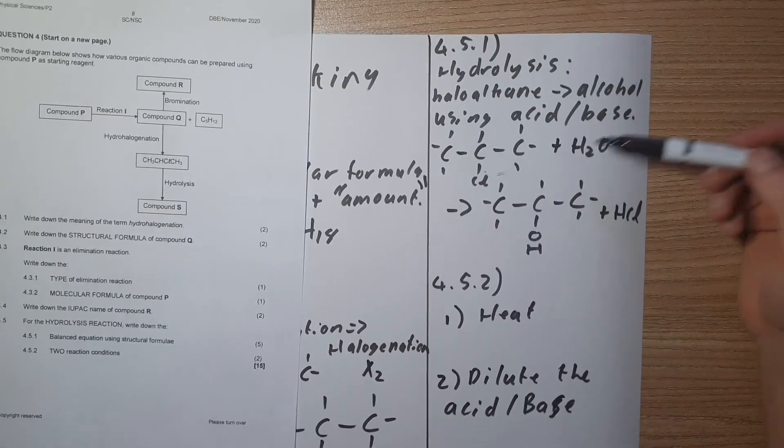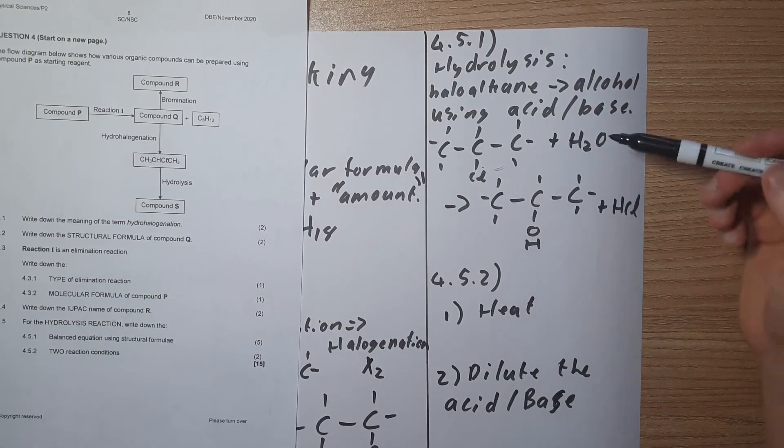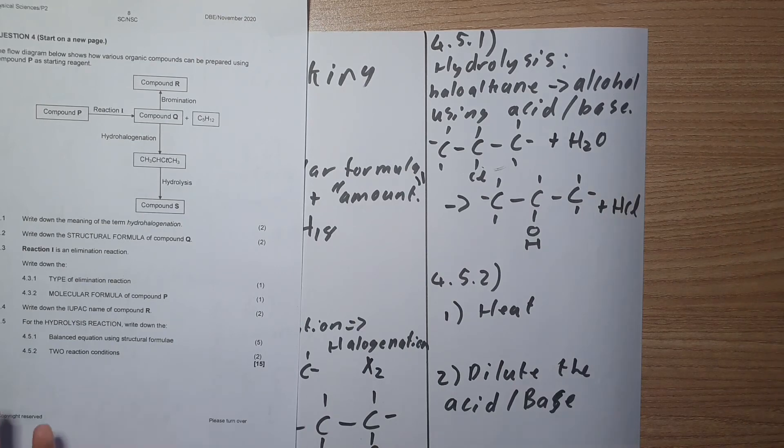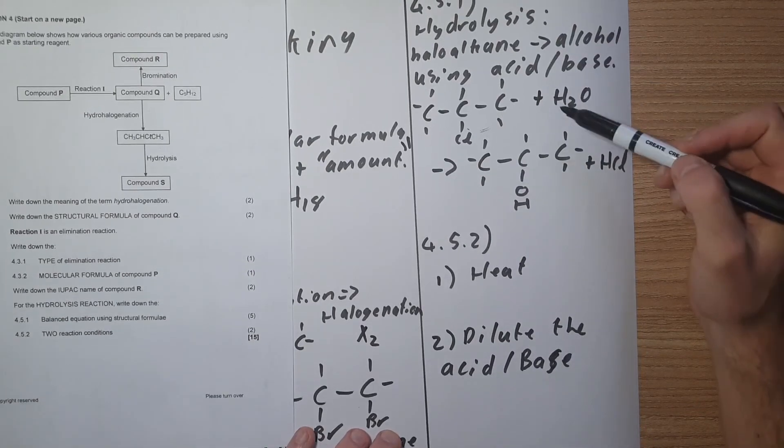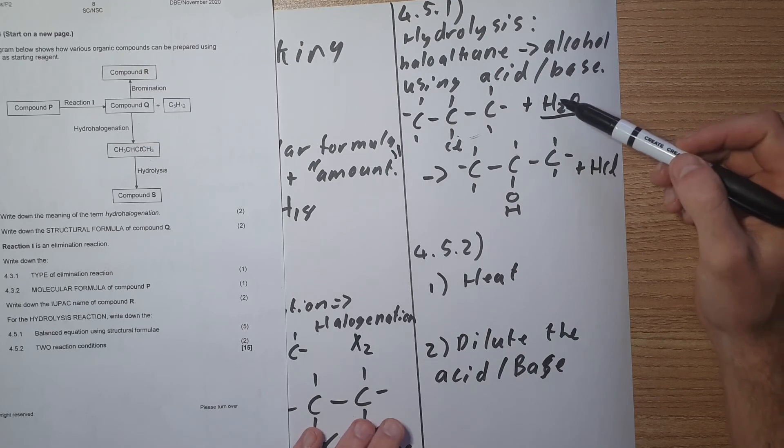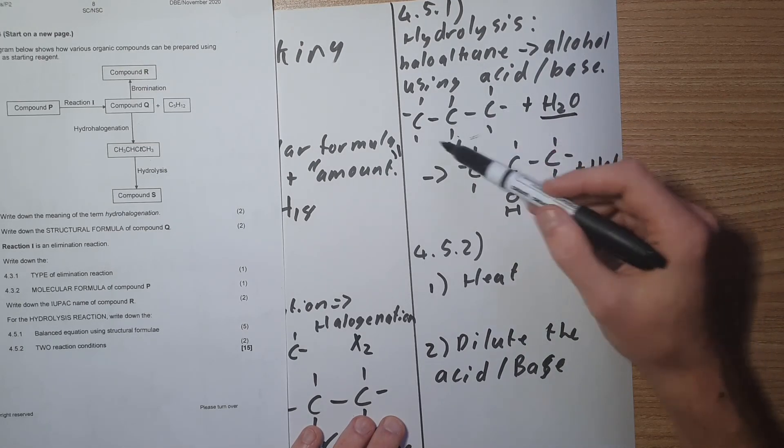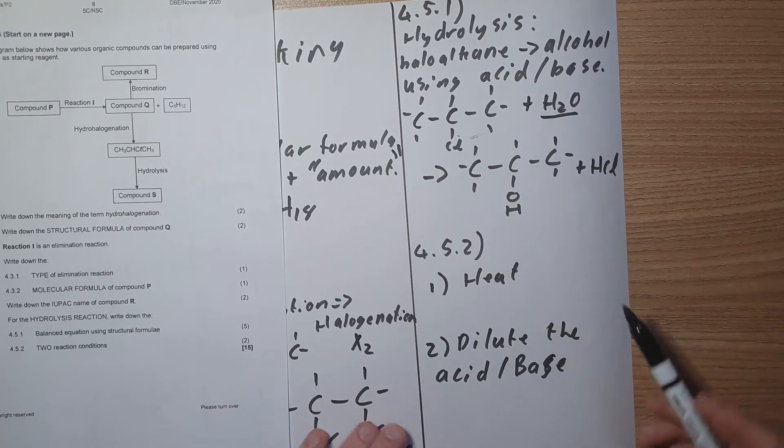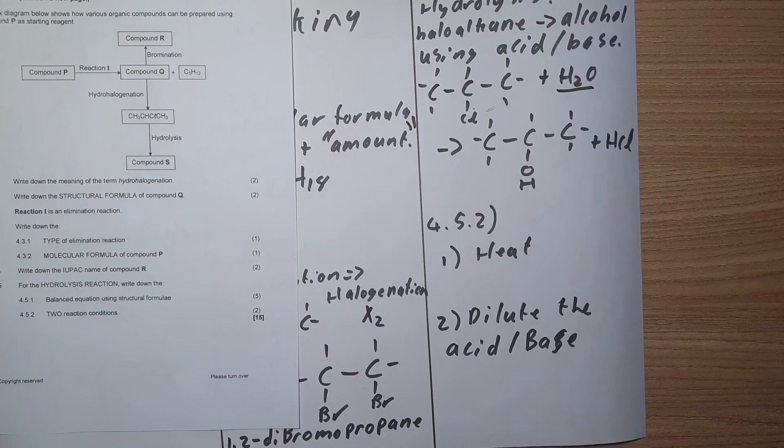We dilute the acid or the base using water. So the water that's formed over here could be not necessarily from the dilution but remember we're diluting something to make it weaker. It's not necessarily linked to the H2O over here. I've just used H2O in order to split the chlorine from the molecule in order to form my alcohol at the end. And that's how we do this question.